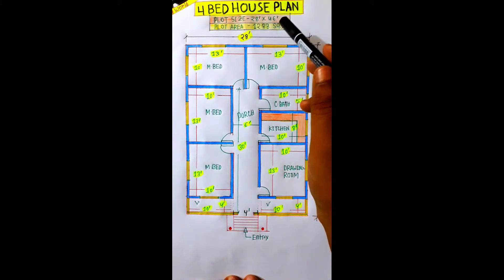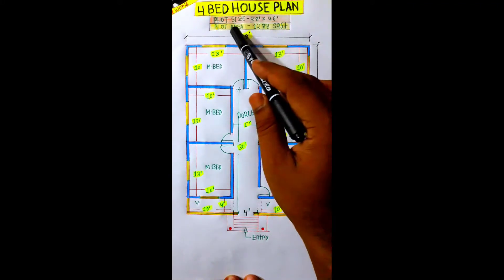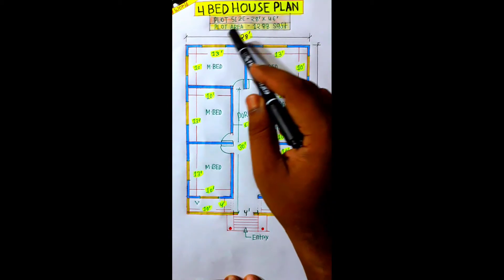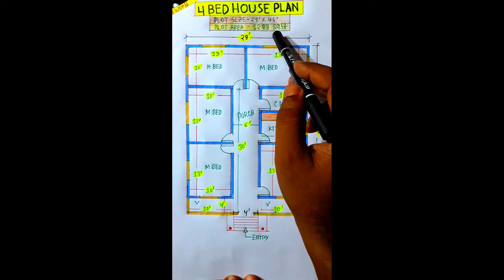Hello friends, this is a tin shed 4 bedroom house plan. Plot size: 28 feet by 46 feet, plot area: 1,288 square feet.